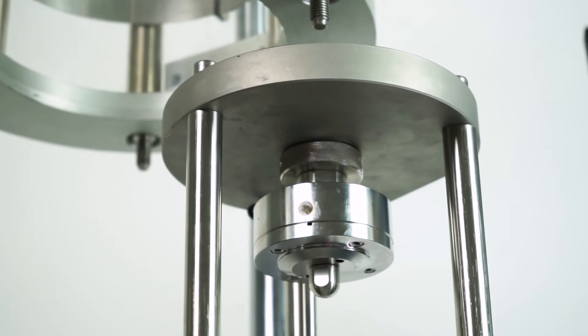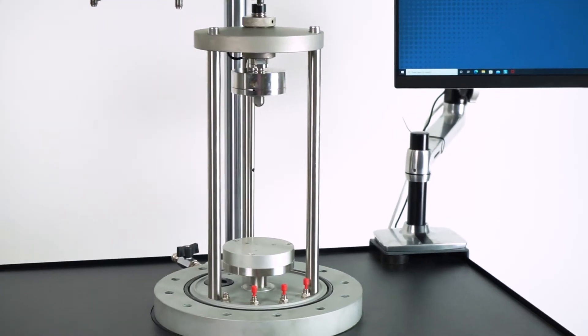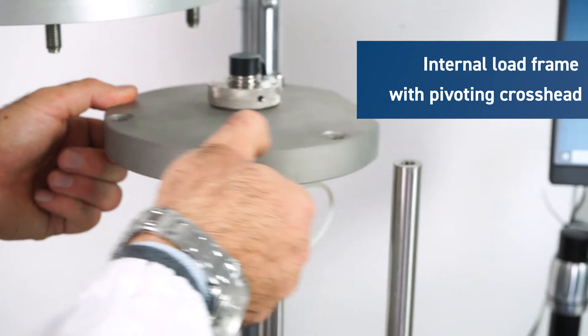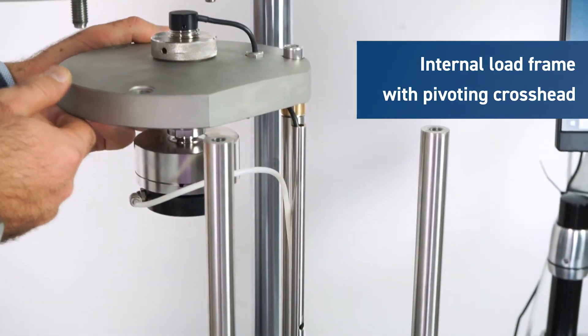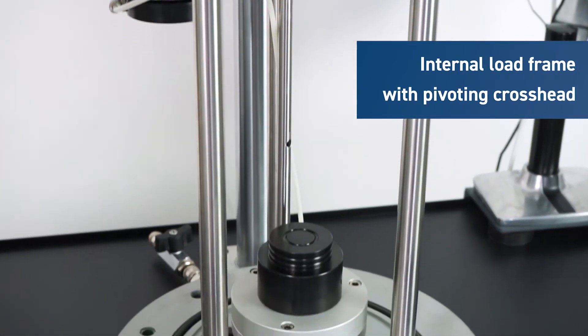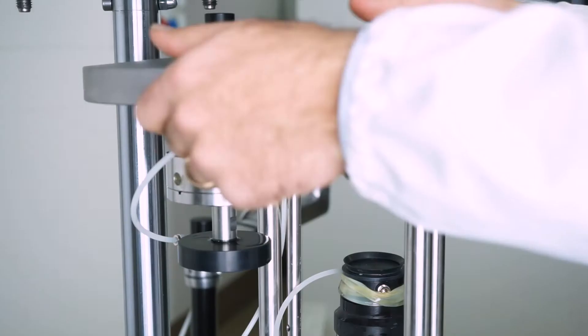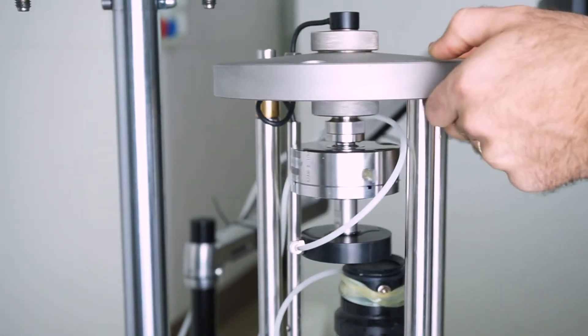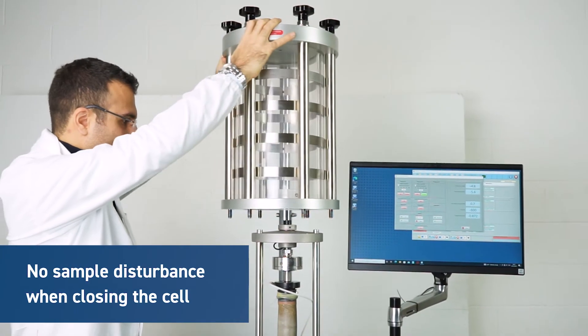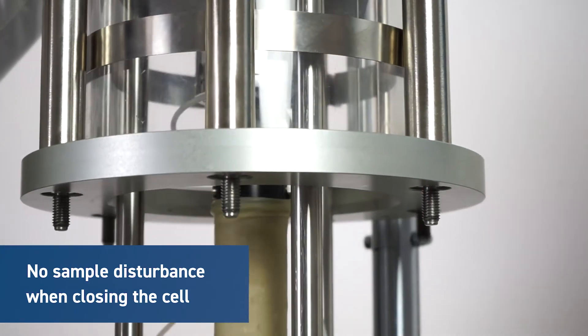The integrated triaxial cell includes an internal load frame consisting of three columns supporting an upper pivoting crosshead that ensures complete alignment for the vertical load application and leaves ample free space for sample preparation. The operator can easily center the upper plate so that the load cell connects through the top cap to the specimen.